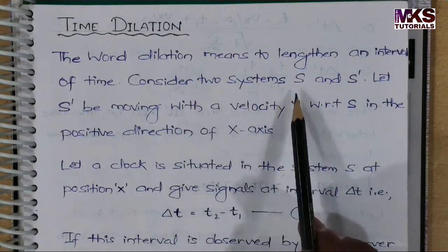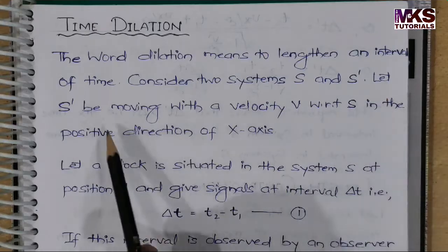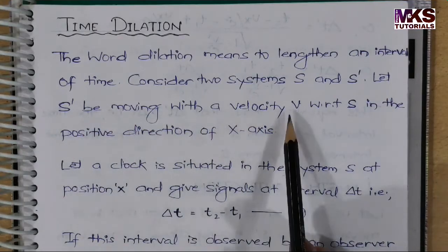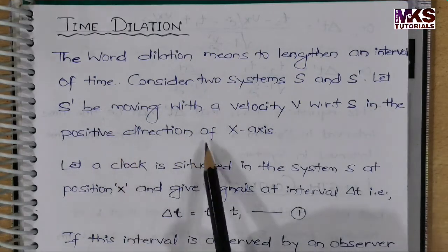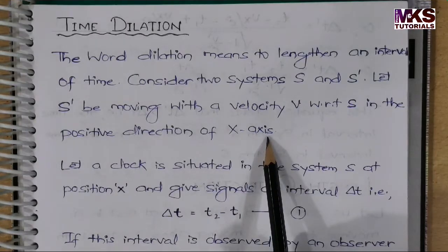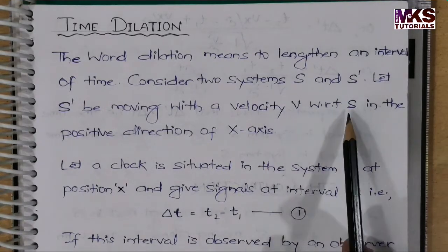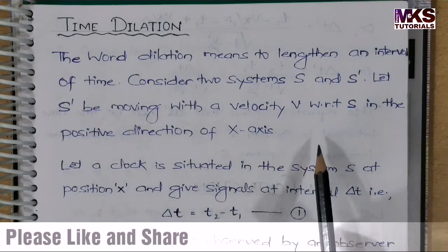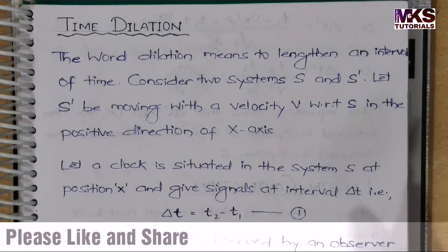Consider two systems S and S'. Let S' be moving with a velocity V with respect to S in the positive direction of X-axis. V-velocity moving towards positive X-axis.